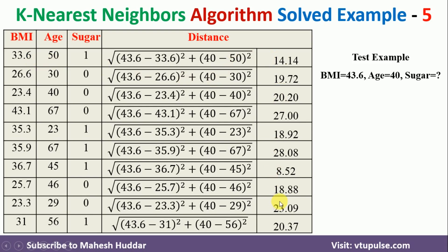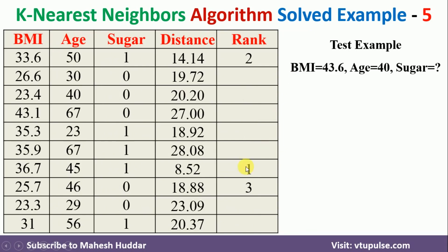Now I need to find the three nearest neighbors, since k is equal to 3. The minimum distance is 8.52, making it the first nearest neighbor. 14.14 is the second smallest, so it is the second nearest neighbor. 18.88 is the third nearest neighbor.